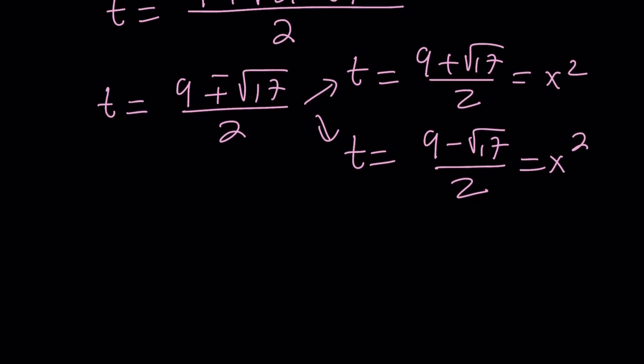Now, let's go ahead and take a look at each one. From here, we should be getting these solutions for x, right? But how do you get it? We're going to need to square root this. So, if x squared is equal to 9 plus square root of 17 over 2,